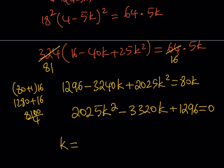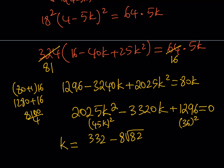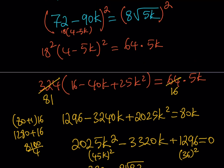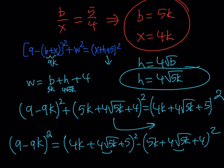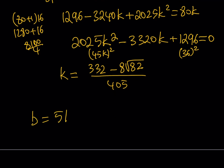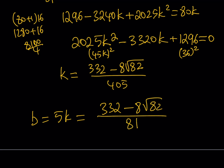Solving the quadratic for k gives k = (332 − 8√82) / 405. Since b = 5k, multiplying by 5 and simplifying (5/405 = 1/81) gives the final answer: b = (332 − 8√82) / 81. That is the value of b we were looking for.